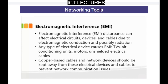EMI, or electromagnetic interference, is a disturbance that can affect electrical circuits, devices, and cables due to electromagnetic conduction and possibly radiation. Any type of electrical device can cause EMI — TVs, air conditioning units, motors, and unshielded electrical cables. Copper-based cables and network devices should be kept away from these electrical devices and cables to prevent any network communication issues, attenuation, or interference.